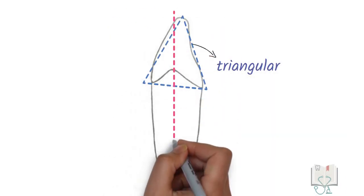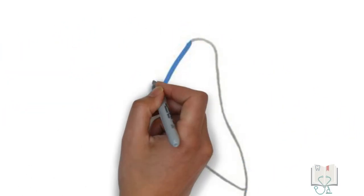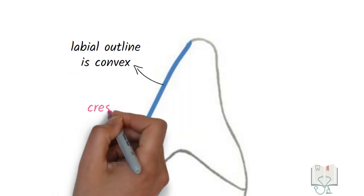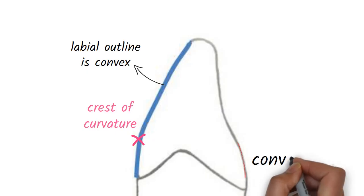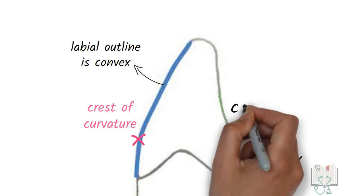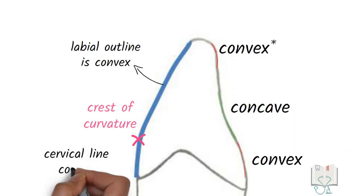The incisal ridge is not on the midline axis of the tooth but slightly lingual to it. The labial outline is convex with its maximum convexity in the cervical third. The lingual outline is convex in the cervical third, concave in the middle third and concave in the incisal third. The cervical line is convex and the convexity is towards the crown.